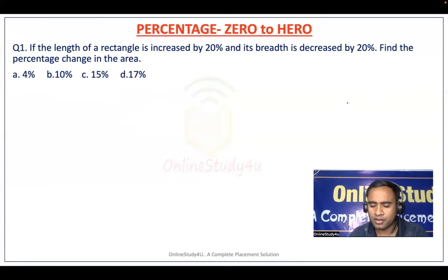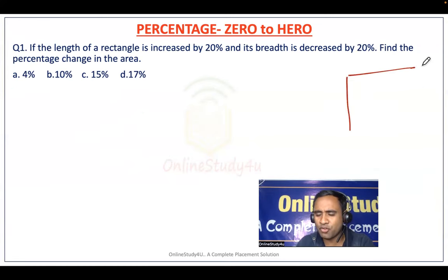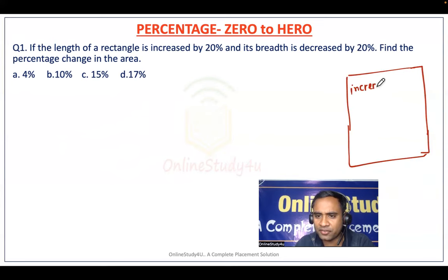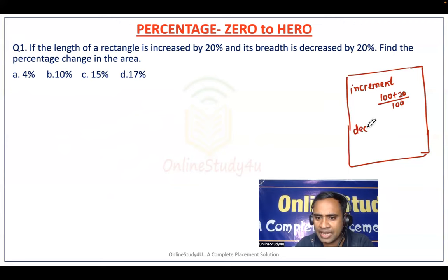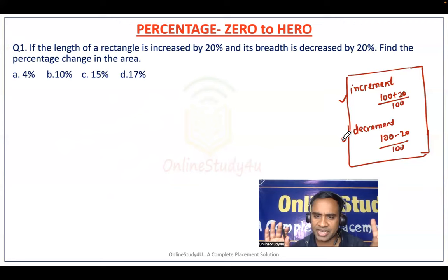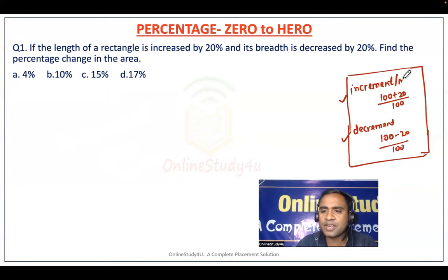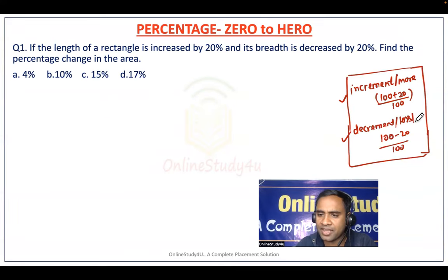Let me explain the clear way of solving it so you can do this in your mind. If there is any kind of increment, add it to 100 and divide by 100. If there is any kind of decrement, subtract it from 100 and divide by 100. Keep these two rules in mind and percentage and profit-and-loss will become very easy for you.